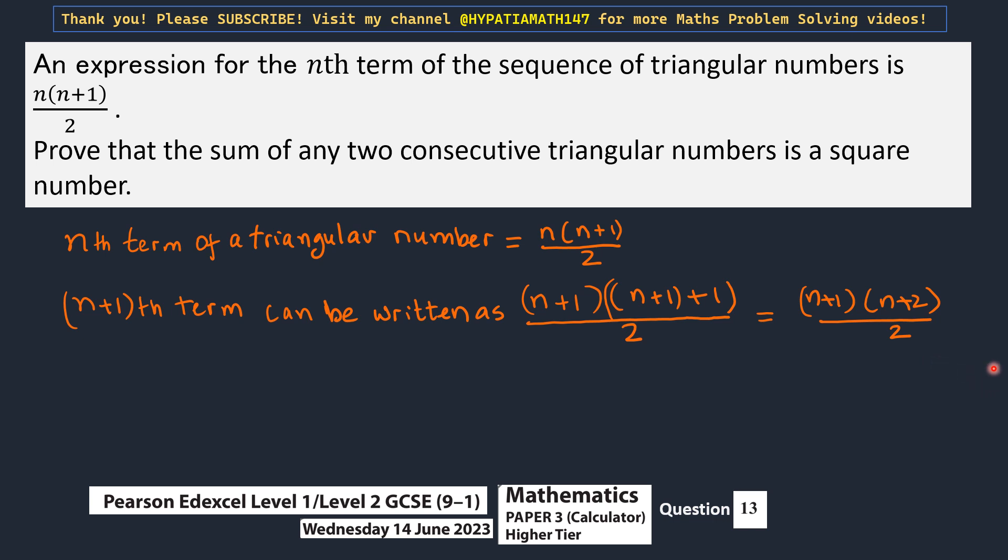We have to prove that the sum of any two consecutive triangular numbers is a square number. So the consecutive triangular numbers would be the nth term and the n plus 1th term, you add them. So n times n plus 1 out of 2 plus n plus 1 times n plus 2 out of 2.